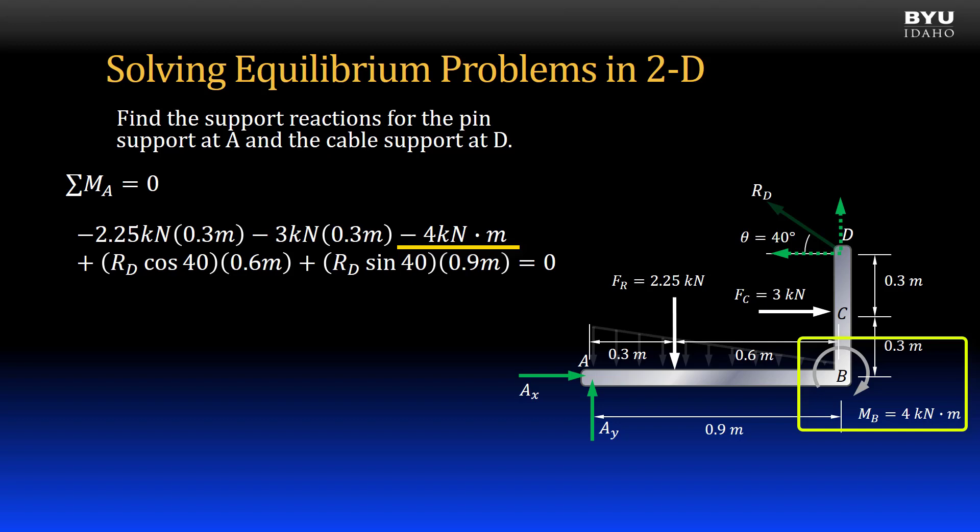It is 4 kN·m in the negative direction. Notice that there is no moment arm for the concentrated moment. This sometimes is confusing to students. It is a free couple moment and its location on the structure does not matter here.